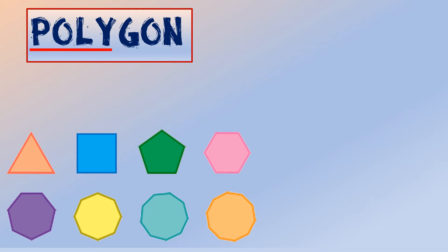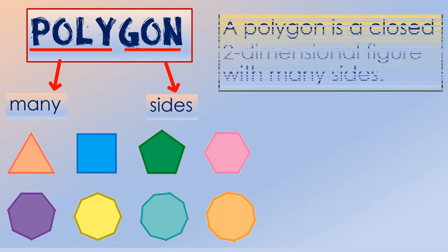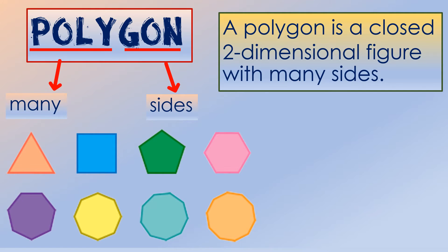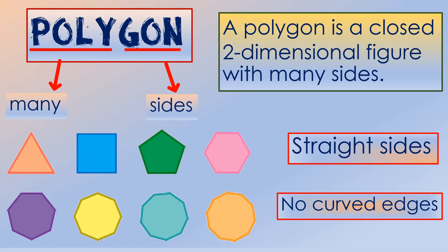The prefix poly means many, and the suffix gon refers to the sides. In other words, a polygon is a closed two-dimensional figure with many sides. Polygons must have straight sides and no curved edges.